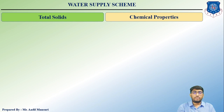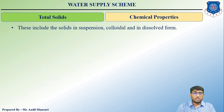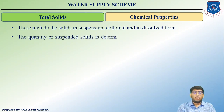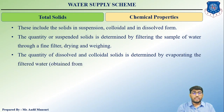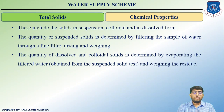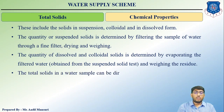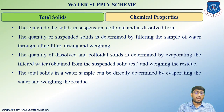The first chemical parameter we will discuss today is total solids. These solids include solids in suspension, colloidal form, or in the dissolved form. The quantity of suspended solids is determined by filtering the sample of water through a fine filter, drying, and weighing. The quantity of dissolved and colloidal solids is determined by evaporating the filtered water obtained from the suspended solid test and weighing the residue. The total solids in a water sample can also be directly determined by evaporating the water and weighing the residue.